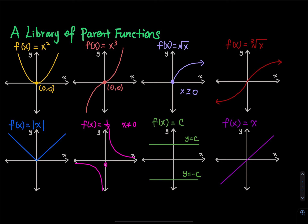If you change the square root to a cube root, the graph looks similar but x can be any real number — positive, negative, or zero. For example, the cube root of positive eight equals two, because two times itself three times equals eight. When x equals negative eight, y equals negative two, because negative two times itself three times equals negative eight: negative two times negative two is positive four, times negative two equals negative eight.